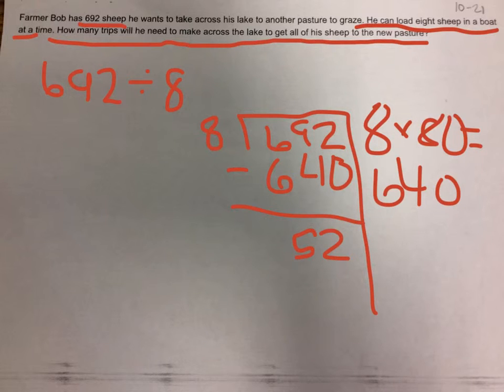So let's do 8 times 6, which equals 48. So now we need to subtract 48.